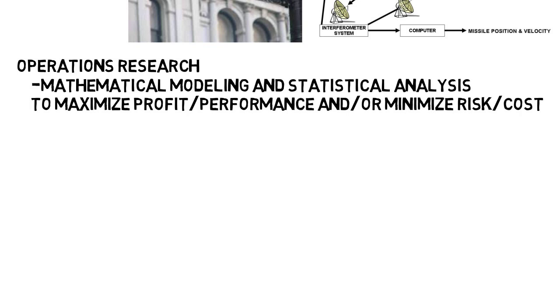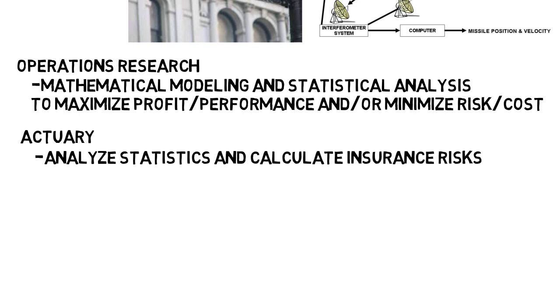Then some more specific routes you can go include operations research, where you'd do mathematical modeling and statistical analysis to maximize profit and performance, and or minimize risk and cost for a business. You can be an actuary, which is actually a big field where you analyze statistics and calculate insurance risks and premiums for things like life and car insurance. There's of course teaching, and there's plenty more. So many of these fields involve math, but also other things like statistics, programming, and so on, which is why I said it's common for applied math majors to get a minor in computer science, because it's not all just doing math.